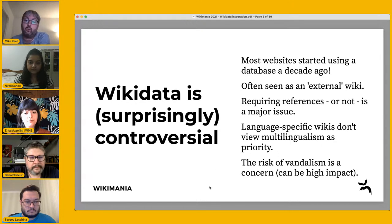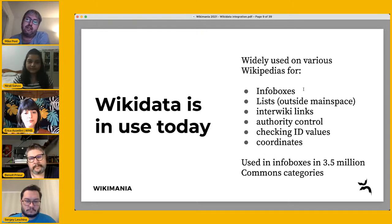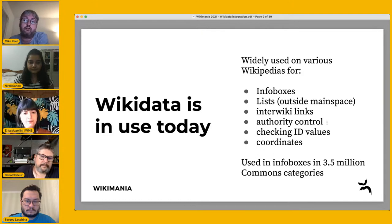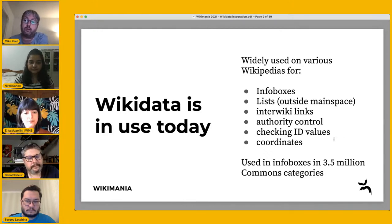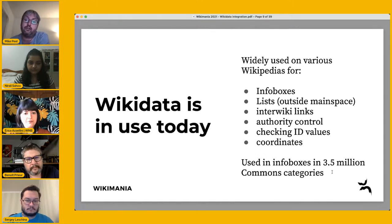Despite the controversies, Wikidata is in use today and has been very successful. It's widely used on various Wikipedias for infoboxes, lists, interwiki links, and authority control at the bottom of articles. You can cross-check IDs and coordinates across Wikipedias. My personal project at the moment is infoboxes in Commons categories — we now have three and a half million of them, and it's completely multilingual, so if you're browsing Commons in your language you can find information about a category in your language, which is really new.